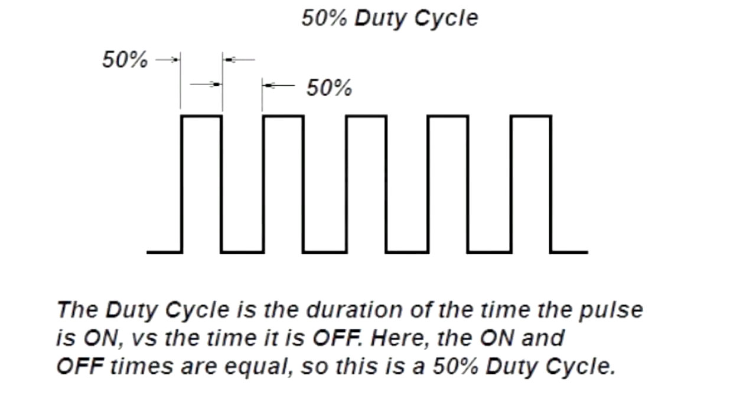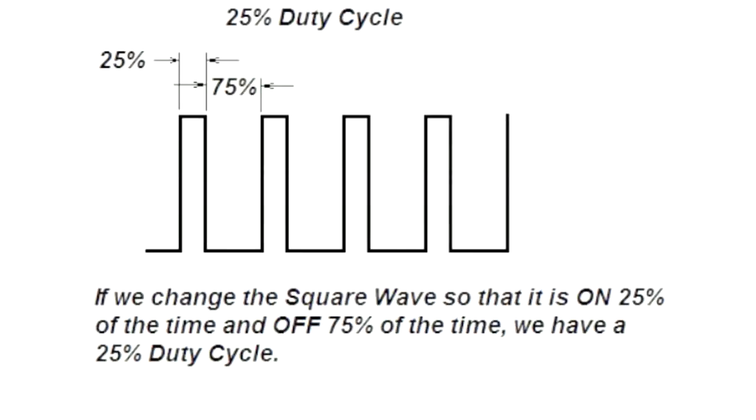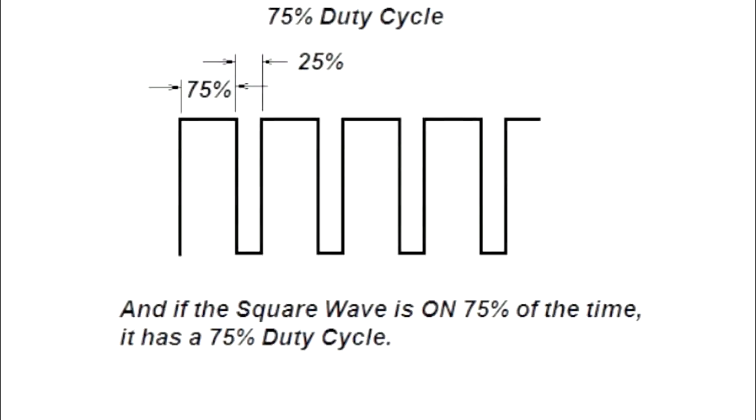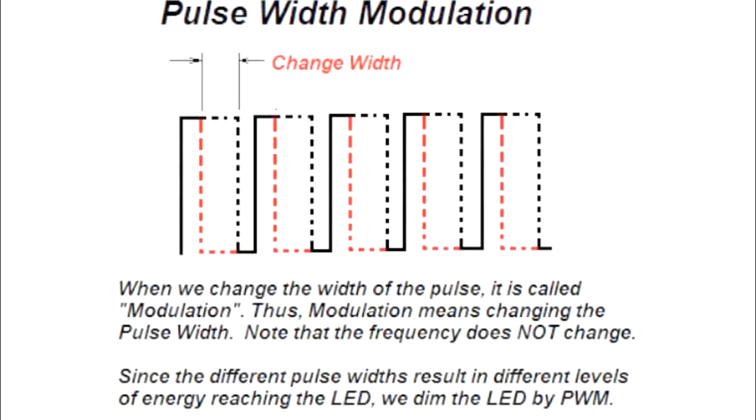The duty cycle is a ratio of the on time of the Pulse Width versus the off time. Here we see that the on time and off time are 50%, so we have a 50% duty cycle. In this example, the duty cycle has changed so that the on time is only 25% of each cycle. That gives us a 25% duty cycle. In a similar fashion, if we have a 75% on time, we have a 75% duty cycle. When we change the duty cycle of the Pulse, we are modulating the Pulse Width. And that's where the term Pulse Width Modulation comes from.